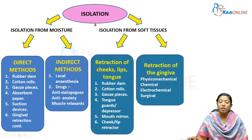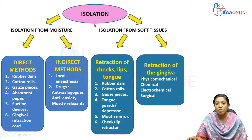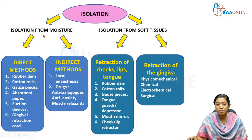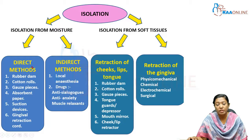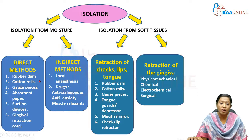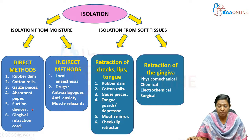Isolation can be classified broadly into two types: isolation from moisture and isolation from soft tissues. Under isolation from moisture, we have direct methods and indirect methods. Direct methods include rubber dam isolation, cotton rolls, gauze pieces, absorbent pads or cellulose wafers, suction devices, and gingival retraction cord.